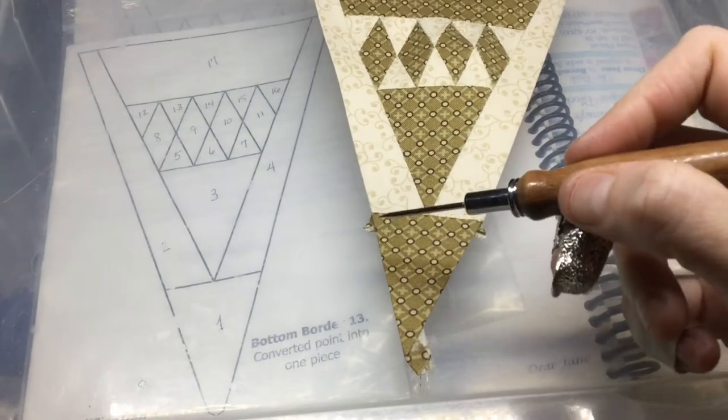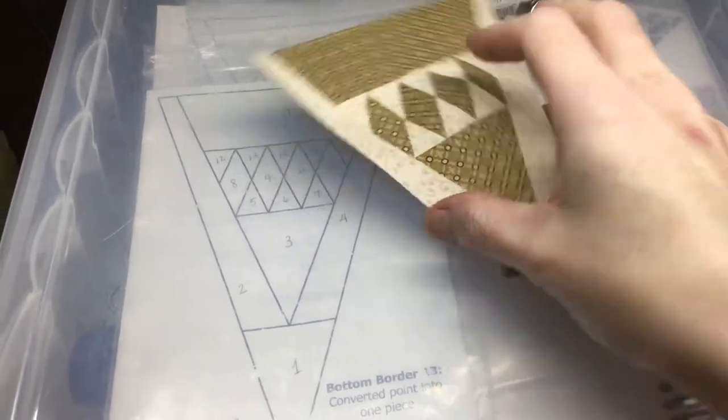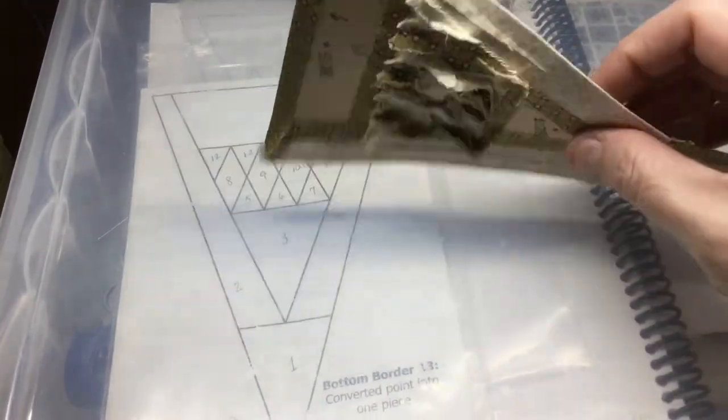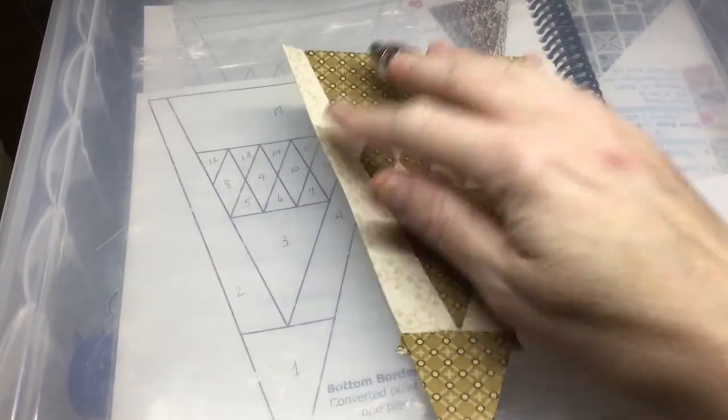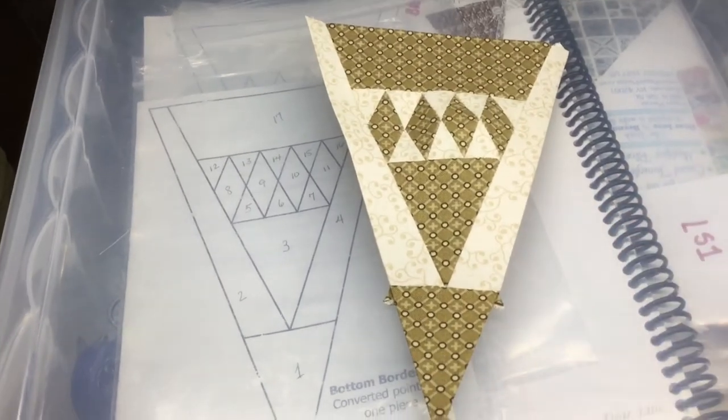So I've attached the triangle to the point and now my block is completed. And just to note, it has a lot of dimensionality to it and it's not flat, that's okay. That will come out once the papers are removed and then the quilt is quilted.